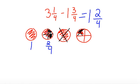But, as all good mathematicians do, you're going to want to check your answer after you find it the first time. So, to check a subtraction problem, you're going to take your difference, which was 1 and 2/4, and add it to 1 and 3/4 to see if you get 3 and 1/4.